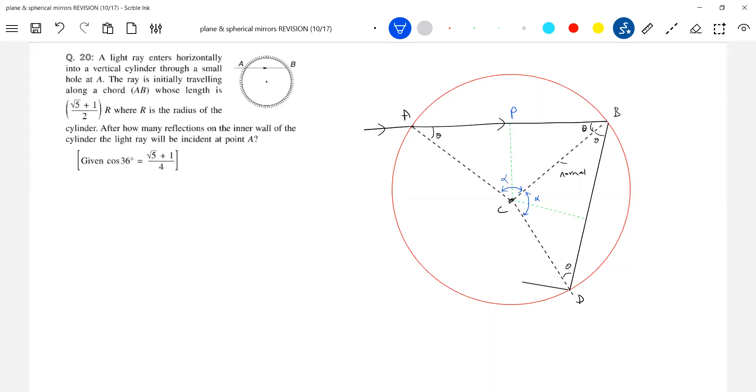A, B, so A, P should be equal to half of this, it will become root phi 1 by 4. Then we know this is R. AC is equal to R. So theta will be cos theta is equal to AP by AC. 36 degrees theta? Yes. Theta 36 degrees we have.